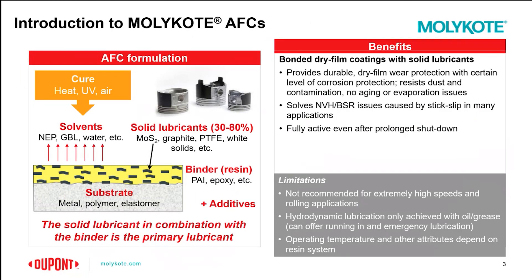This is a brief introduction to what Moly Coat AFCs are. An AFC is comprised of a solvent, solid lubricants — which make up roughly 30 to 80% depending on the formulation — a binder, and whatever additives might be needed for that specific requirement of that AFC. Once the curing process happens, the solvent actually flashes off and you end up with a very thin coating.